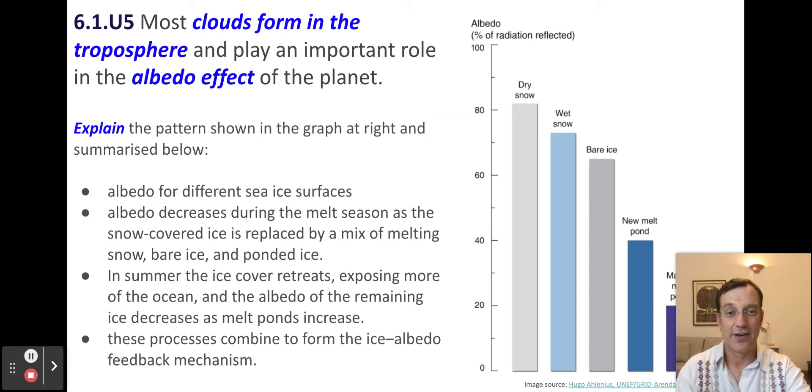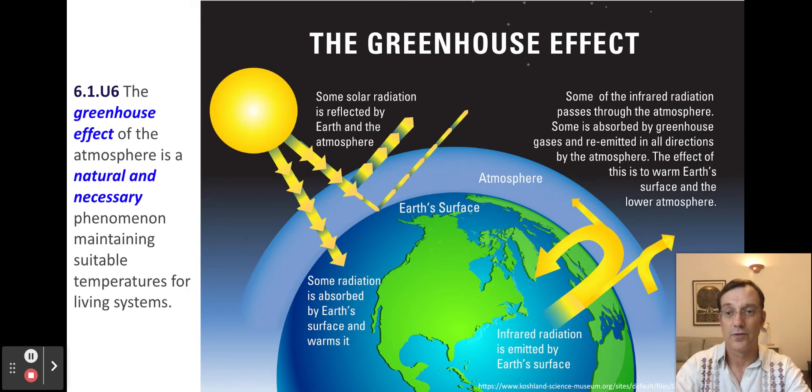So here you go. Some data to show this. You can see the reflectivity of different surfaces. Dry snow, wet snow, bare ice. These are all relatively light colors. They reflect high percentages of light. When you get down here, you have darker surfaces such as exposed water. They absorb a lot more light and you see the reflectivity is significantly lower there.